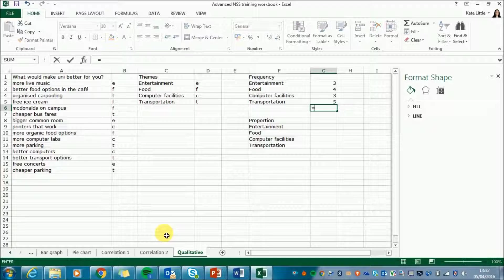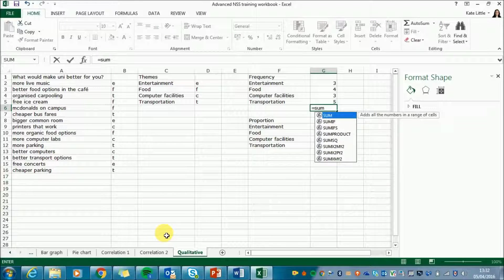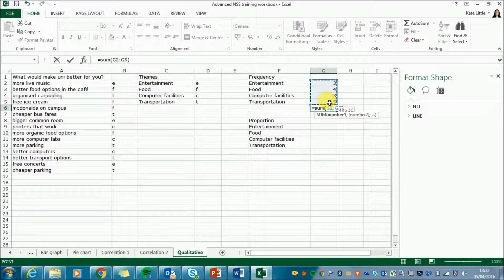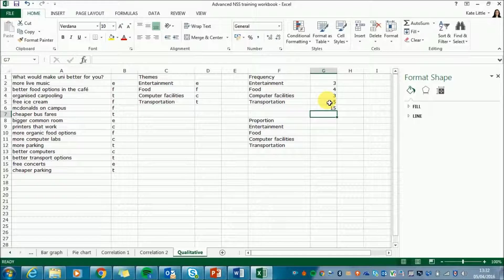So now I've done that I'm just going to check that I've done it right by doing a sum. So add them all up. So equals sum and just select my range of numbers again. Close my brackets. Fifteen. Yep that's right we know we've got fifteen comments.